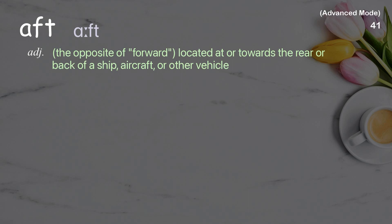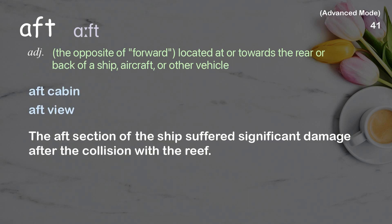Aft: the opposite of forward, located at or towards the rear or back of a ship, aircraft, or other vehicle. Examples: aft cabin, aft view. The aft section of the ship suffered significant damage after the collision with the reef.